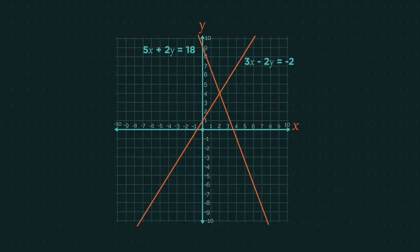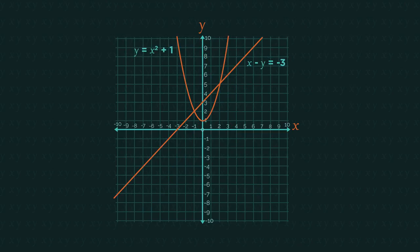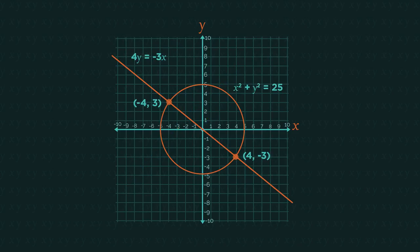When we solve simultaneous equations, we may get one solution like with these linear equations, or if a quadratic is involved we may get two solutions: negative one two and two five. And we might also get two solutions with a straight line and a circle.